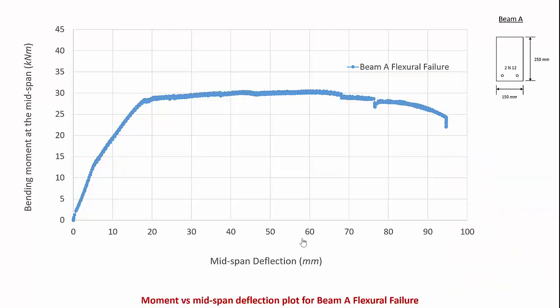Looking at the moment versus mid-span deflection plot for this beam, we see very ductile behavior. Initially the beam behaves linearly. At a certain point the concrete in tension cracks and the beam starts to behave non-linearly. At a moment of around 28 kilonewton meters, the beam starts to yield — that's where the tension steel starts to yield as well — and we can see a large plateau indicating very ductile behavior. The maximum moment reached is around 30 kilonewton meters and the maximum deflection in the beam is around 95 millimeters, making this a very ductile failure mode characterized by a large yield plateau.